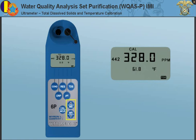Press MS or MR to step the displayed value toward the standard's value, or hold a key down to cause a rapid scrolling of the reading. Finally, press CAL MCLR once to confirm the new value and end the calibration sequence for this particular solution type.